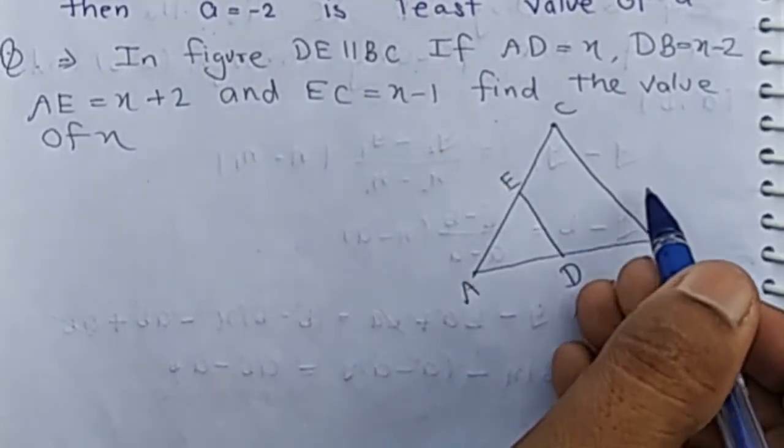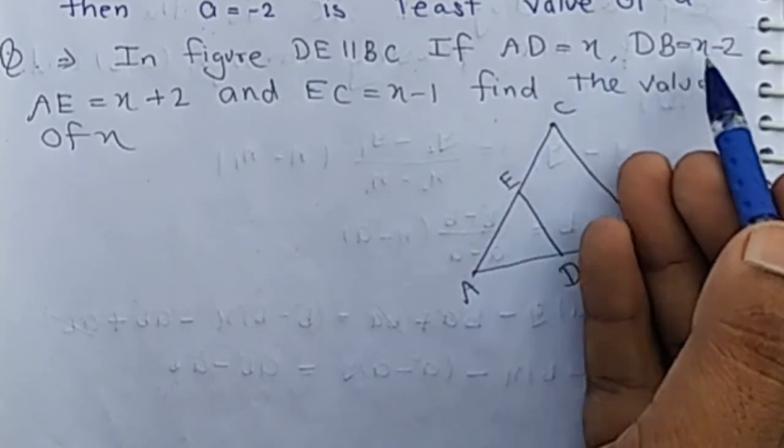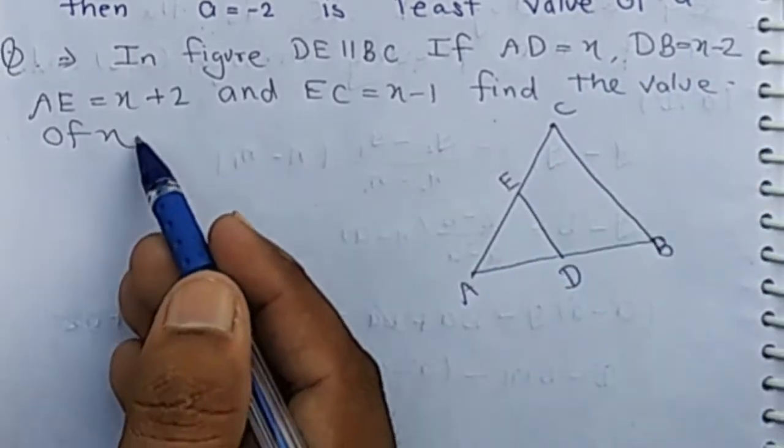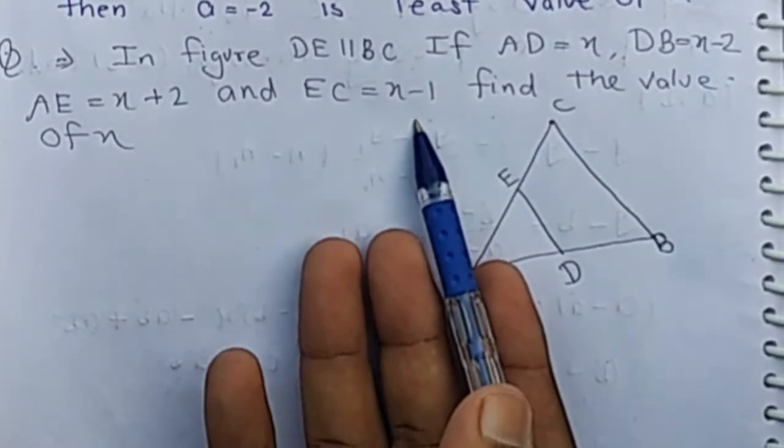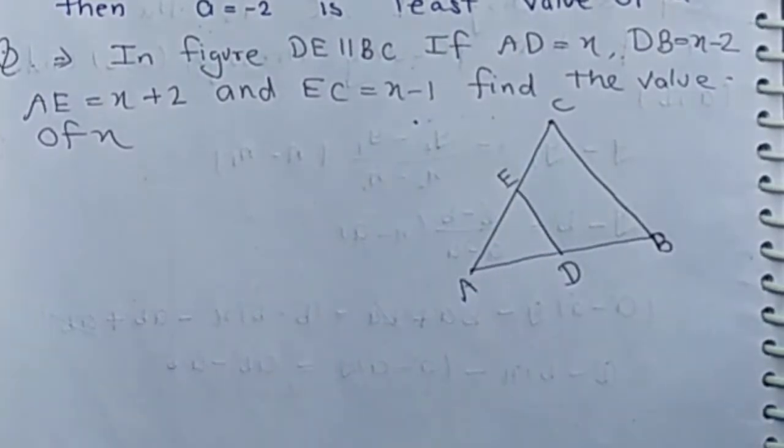In the figure, DE is parallel to BC. If AD equals X, DB equals X minus 2, AE equals X plus 2, and EC equals X minus 1, find the value of X.